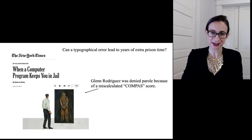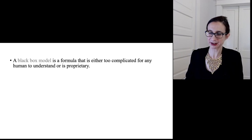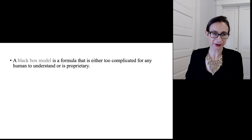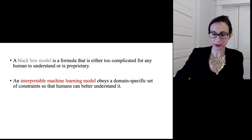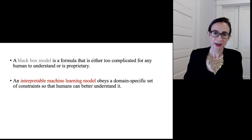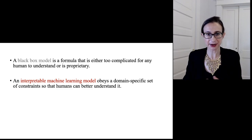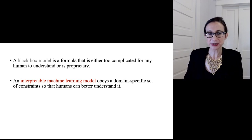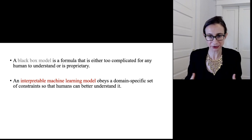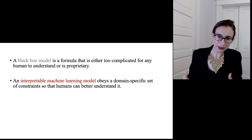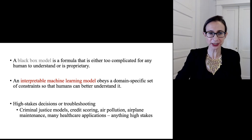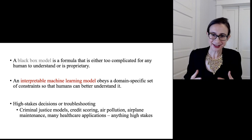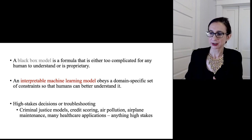COMPASS is a black box model. A black box model is a formula that's either too complicated for any human to understand or it's proprietary. I want to contrast that with interpretable machine learning models. An interpretable machine learning model is a predictive model that obeys a domain-specific set of constraints so that humans can better understand it — it's a predictive formula that a person can understand. We need interpretable models for high-stakes decisions or when we need to troubleshoot the model.